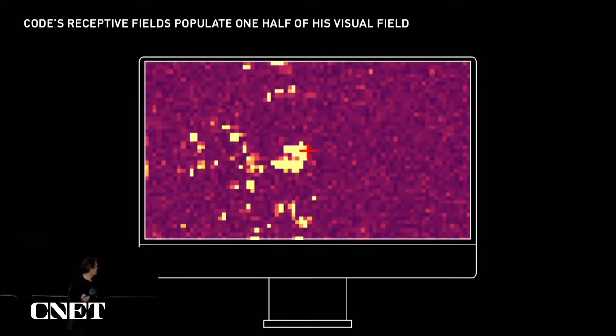If we stimulated the cells whose receptive fields are in this location, we would produce a perception of a flash in that location that only the monkey can see.